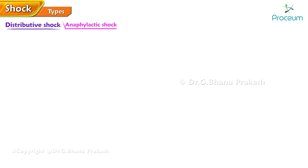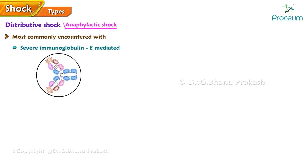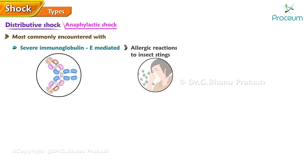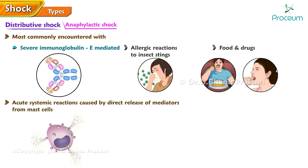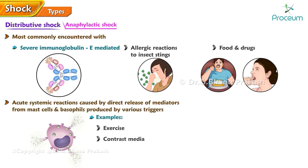Shock from anaphylaxis is most commonly encountered in patients with severe immunoglobulin-E-mediated allergic reactions to insect stings, food, and drugs. The term anaphylaxis also applies to acute systemic reactions caused by direct release of mediators from mast cells and basophils produced by various triggers, such as exercise, contrast media, natural rubber latex, and idiopathic causes.